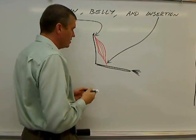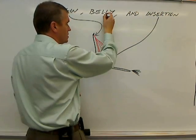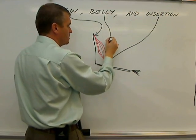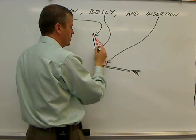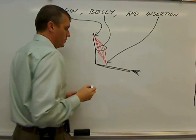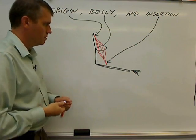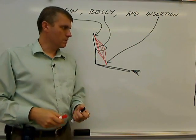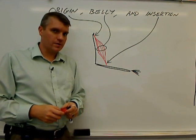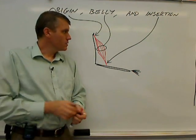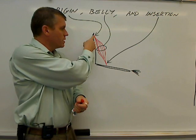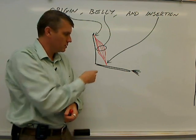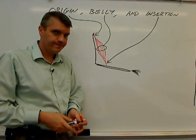And then the belly — that's the easiest one. It's the thickest part of the muscle. So I'll wrap a little circle around that part of the muscle. So: origin of a muscle, belly of a muscle, and insertion of the muscle.